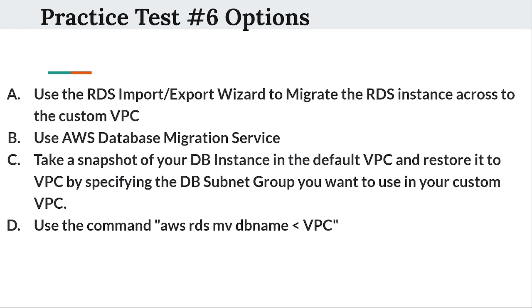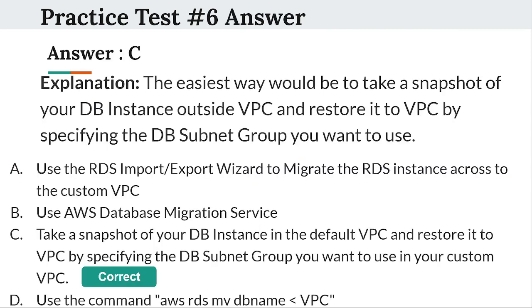Please select your answer in the next 5 seconds. So the right answer is option C, because the easiest way would be to take a snapshot of your DB instance outside VPC and restore it to VPC by specifying the DB subnet group you want to use. Let's move to the next question.